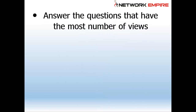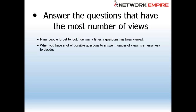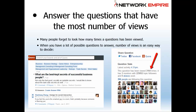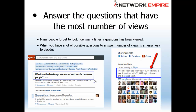Answer the questions that have the most number of views. Many people forget to look at how many times a question has been viewed. When you have a lot of possible questions to answer, number of views is a super easy way to decide which to answer first — this is why we use Quora Extractor to pull them in bulk. For example, the question 'What are the best kept secrets of successful business people?' has been viewed 3,164 times, and as of the date of this video, not a single person has inserted any eye candy into it. Please don't spam this question — put real answers with real opinions and real insight from your own business experience.